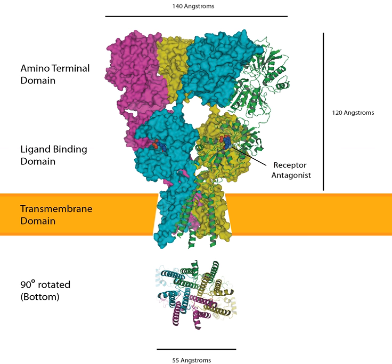Synaptic Plasticity. AMPA receptors are both glutamate receptors and cation channels that are integral to plasticity and synaptic transmission at many postsynaptic membranes. One of the most widely and thoroughly investigated forms of plasticity in the nervous system is known as long-term potentiation (LTP). There are two necessary components of LTP: presynaptic glutamate release and postsynaptic depolarization.